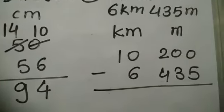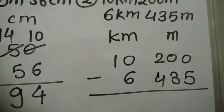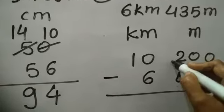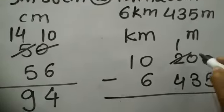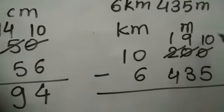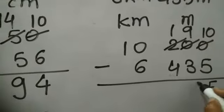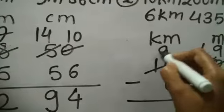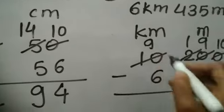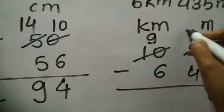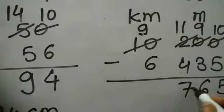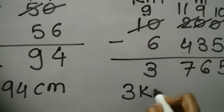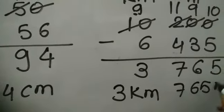Now let us subtract. 0 minus 5 is not possible, so we need to take borrow from the previous digit. But the previous digit of 0 is again 0, so we take borrow from 2. So here 1 will be left over, this will be 9, and this will be 10. 10 minus 5 is 5. 9 minus 3 is 6. Now 1 minus 4 is not possible, so we take borrow from 10. So 9 will be left over there and it will be 11. Now 11 minus 4 is 7, 9 minus 6 is 3. Hence the answer is 3 kilometer 765 meter.